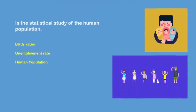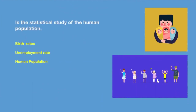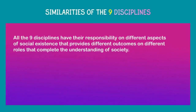And lastly, demography — it is the statistical study of the human population, like birth rates, unemployment rate, and human population. The similarity of the nine disciplines is that they have the responsibility on the different aspects of social existence that provides different outcomes on different roles that complete the understanding of the society.